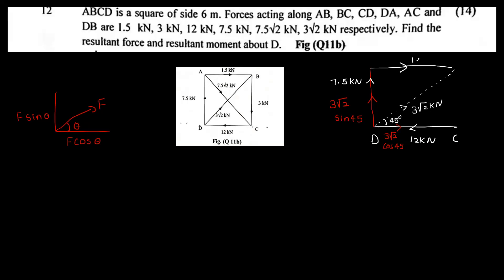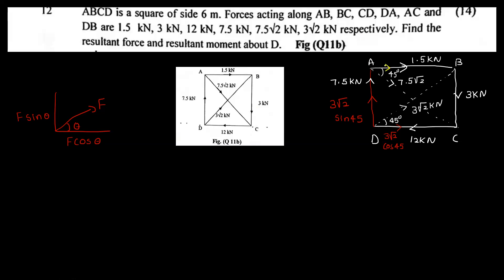Force along AB is 1.5 kN. Force along BC is 3 kN, and along BA it is 1.5 kN. The diagonal force is 7.5√2 at 45 degrees. Resolving: 7.5√2 cos 45 gives 4.5 kN, and 7.5√2 sin 45 gives 7.5 kN.